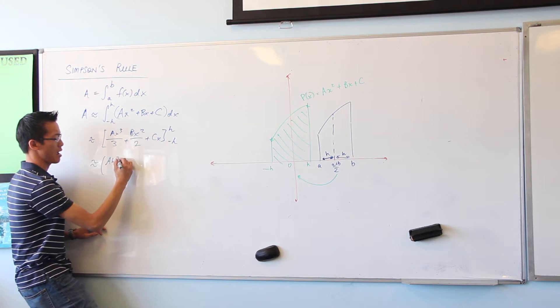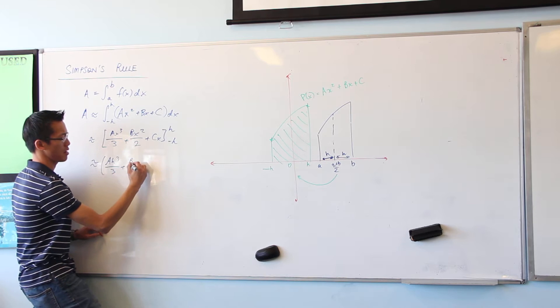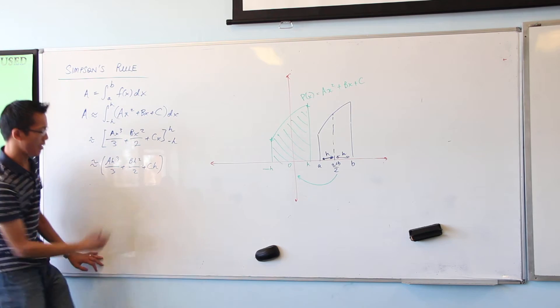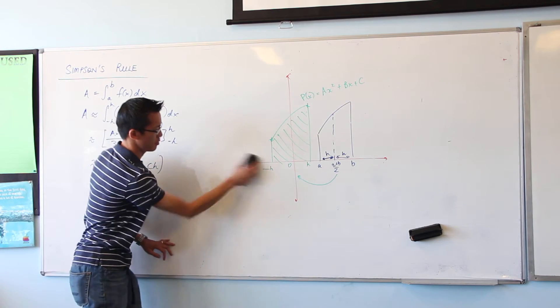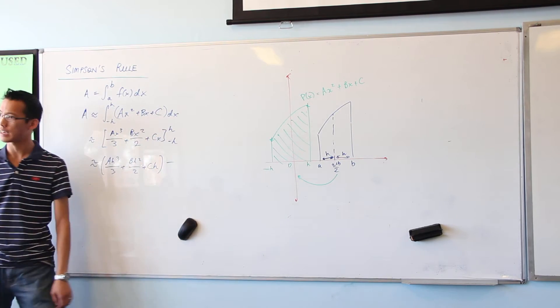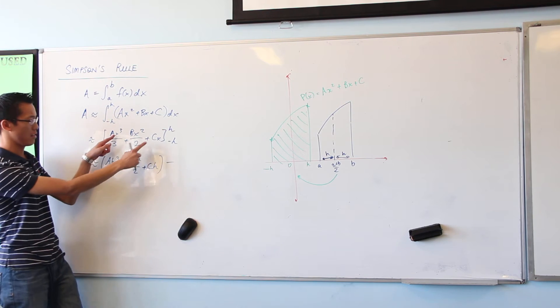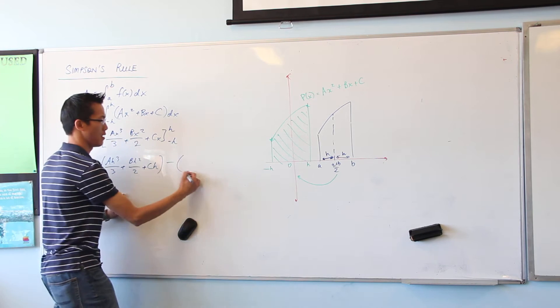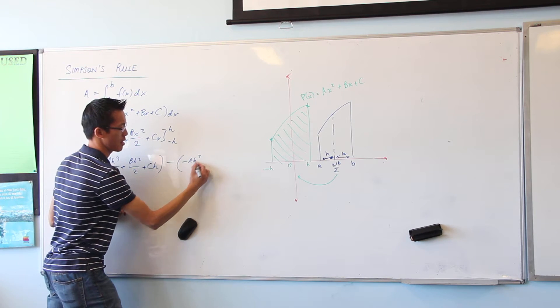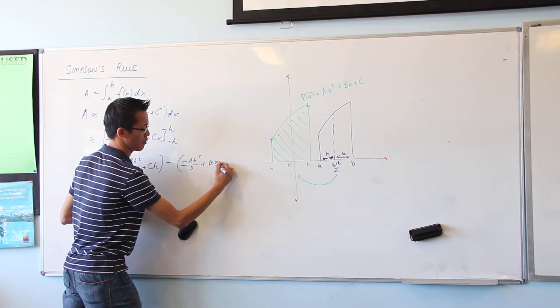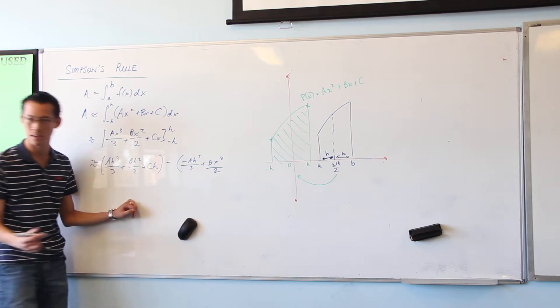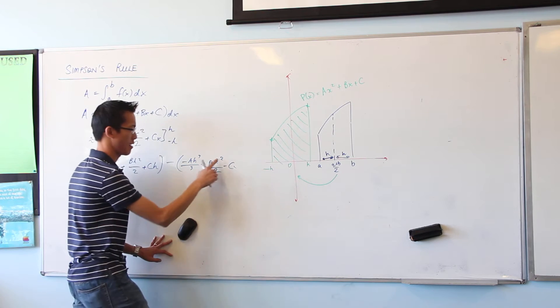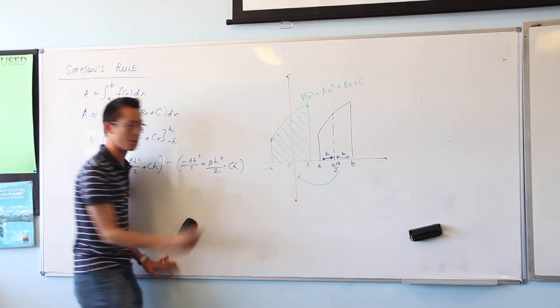So let's just evaluate upper and lower bounds. First you've got a h cubed on 3, b h squared on 2, c h. Okay, then I should get rid of this minus, and just watch out for your negatives here. Because I'm subbing in minus h, but that minus is going to appear a couple of times, so be careful that you don't miss it. This first one's going to be minus h cubed.